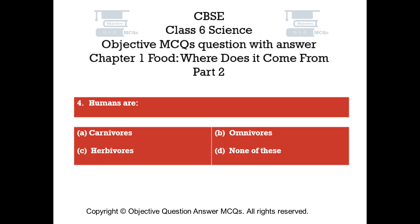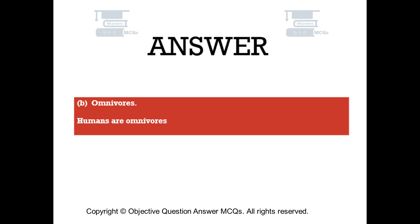Question number 4. Humans are: Option A: Carnivores. Option B: Omnivores. Option C: Herbivores. Option D: None of these. The right answer is Option B. Humans are omnivores.